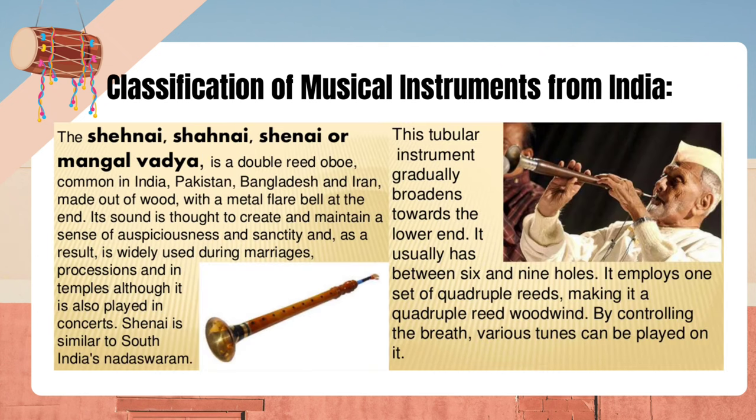The Shanai, also called mangal vadiyah, is a double reed oboe common in India, Pakistan, Bangladesh and Iran, made of wood with a metal flare bell at the end. Its sound is thought to create and maintain a sense of auspiciousness and sanctity and is widely used during marriages, processions and in temples, although it is also played in concerts. Shanai is similar to South India's Nadaswaram. This tubular instrument gradually broadens towards the lower end, usually has between six and nine holes, and employs one set of quadruple reeds, making it a quadruple reed woodwind. By controlling the breath, various tunes can be played on it.